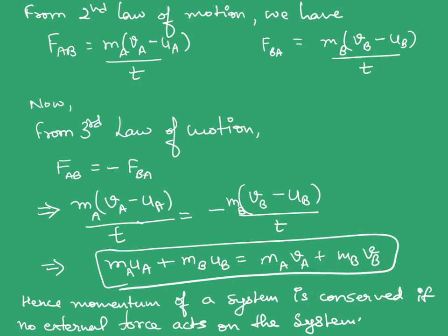From second law of motion, we have FAB equal to change in momentum of ball A upon time, which is MA(VA - UA) upon time T. Similarly, force FBA is change in momentum of ball B upon time, MB(VB - UB) upon T, where this time is the duration for which the collision occurs. From third law of motion, FAB equals minus FBA.